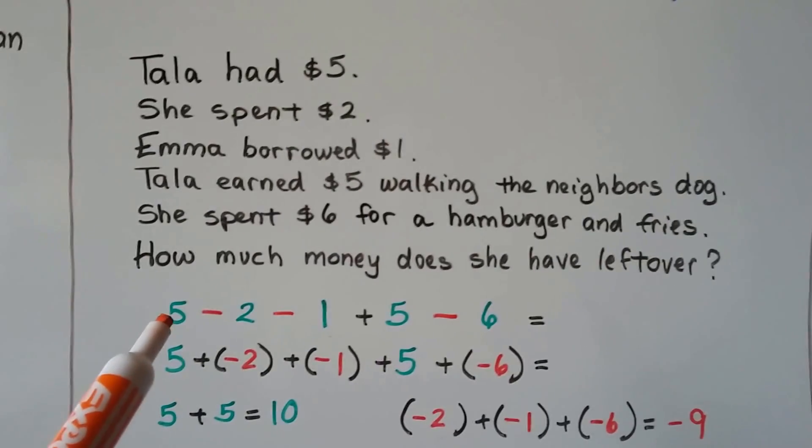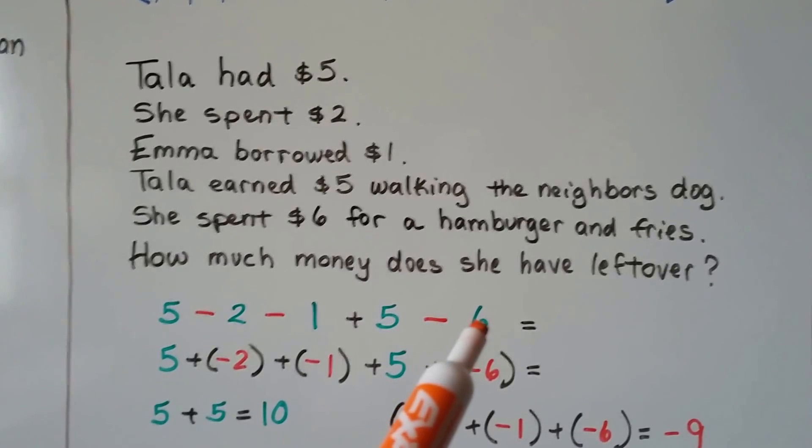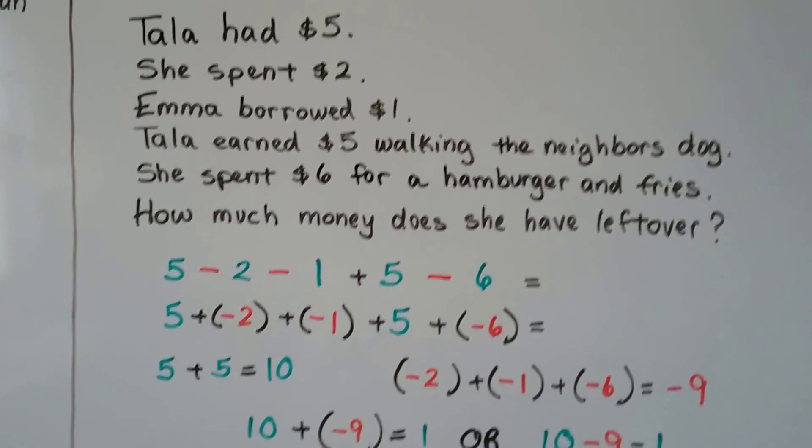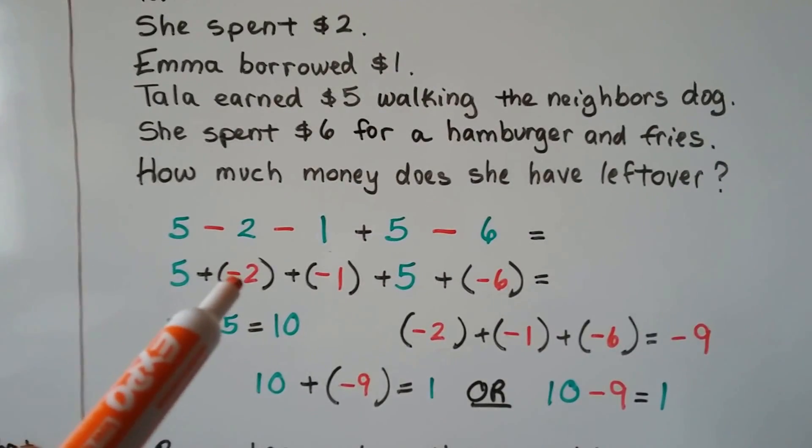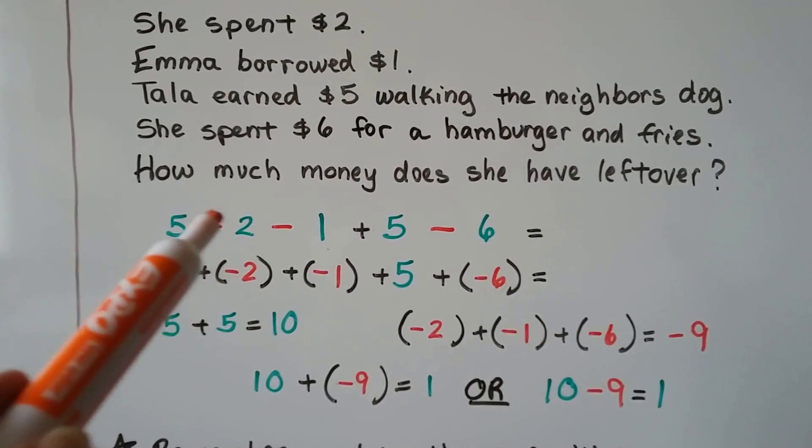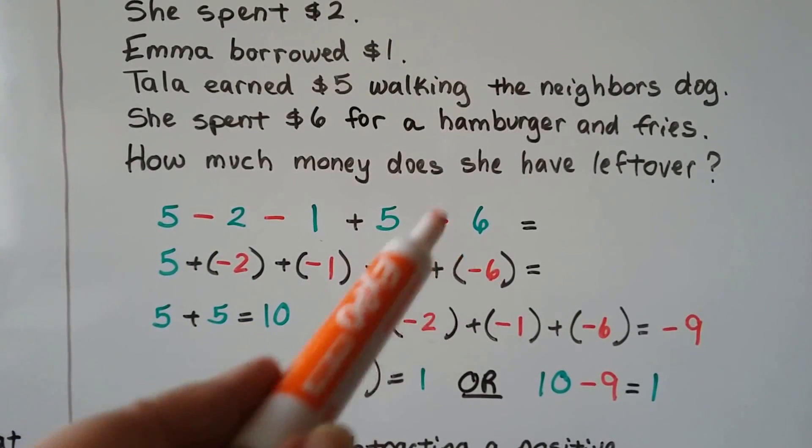So she had $5, she spent $2, she spent $1, she earned $5 and she spent $6. We can also say that she added a negative. Instead of subtracting a positive, we can say we're adding a negative $2. We're adding a negative $1, adding a $5 and adding a negative $6.